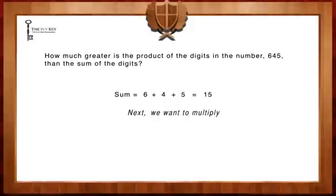Next, we want to multiply the different digits in our number to find the product. 6 times 4 times 5 equals 120.